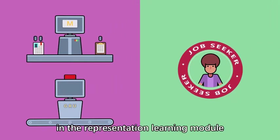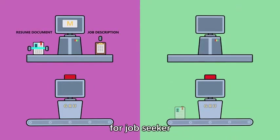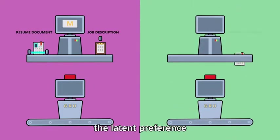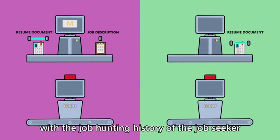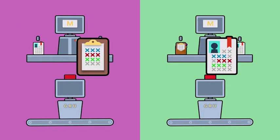Symmetrically, in the representation learning module for the job seeker, the latent preference with the job hunting history of the job seeker is modeled via updating and reading through the memory.